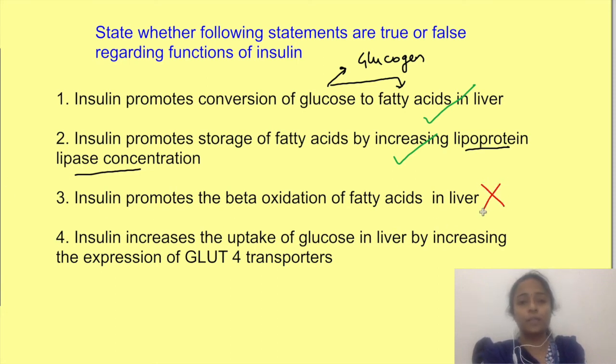Well the third statement is wrong since insulin spares the use of fatty acid. Instead it promotes its synthesis. Fourth statement is also wrong since we have seen that in liver insulin increases the activity of the enzyme glucokinase due to which glucose entry into hepatocytes is increased.